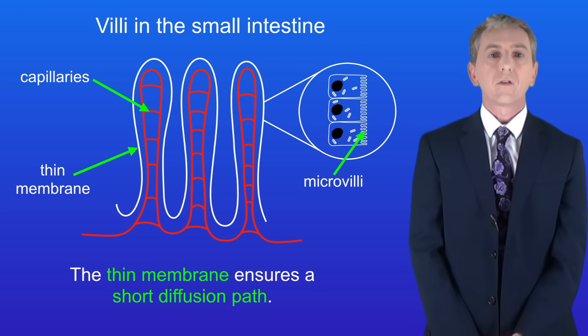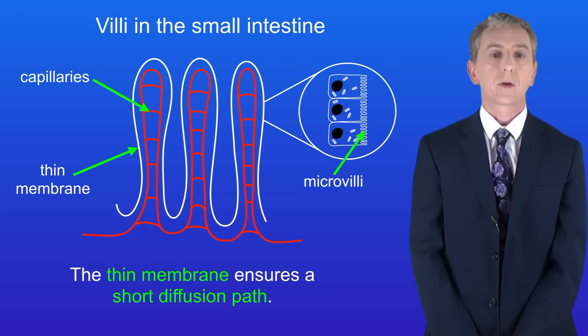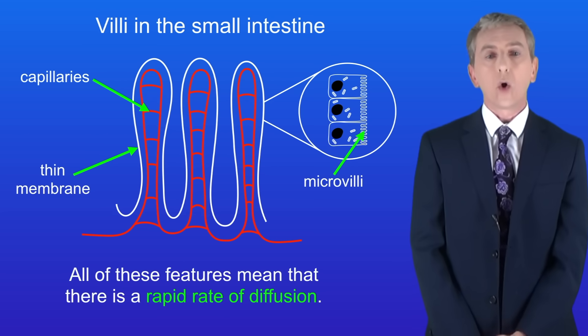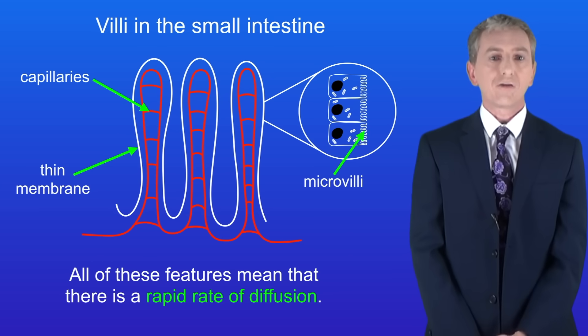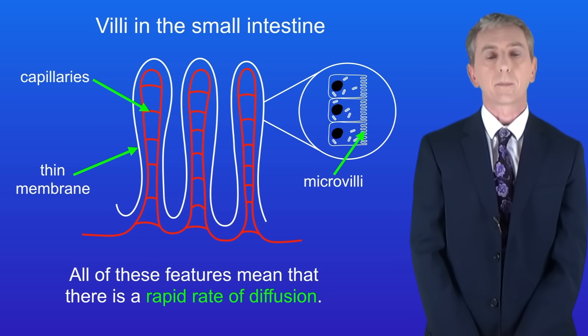Finally the villi have a thin membrane and this ensures that there's a short diffusion path. All of these features mean that there's a rapid rate of diffusion of the products of digestion into the bloodstream.